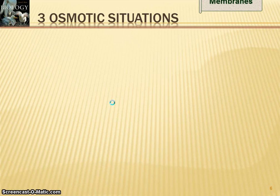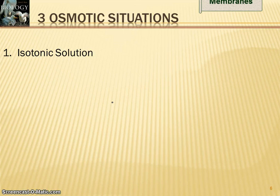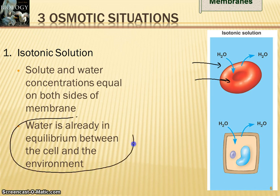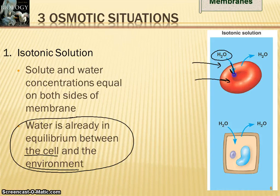Osmosis sets itself up with cells in three different situations. The first one is called an isotonic solution. In an isotonic solution, the concentration of water inside the cell is equal to the concentration of water outside the cell. So water is already in equilibrium with its environment. Inside the cell, the water concentration is the same as it is in your bloodstream, or in the pond, or wherever the cell is sitting. As you can see from this picture, water does move in, but because it's in equilibrium, an equal amount gets bumped out — all due to those intermolecular collisions.